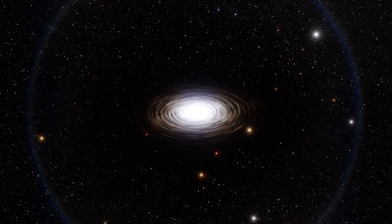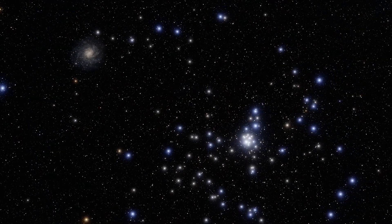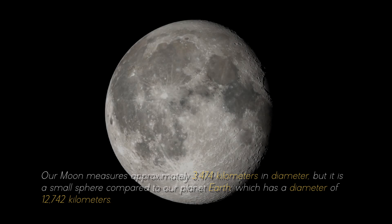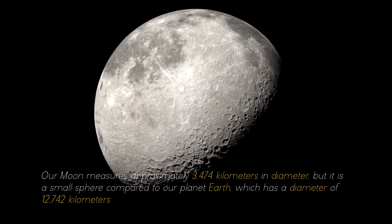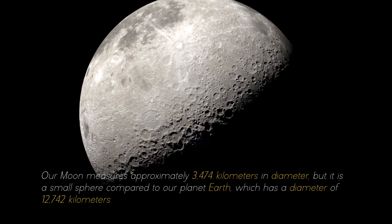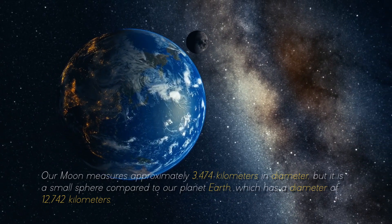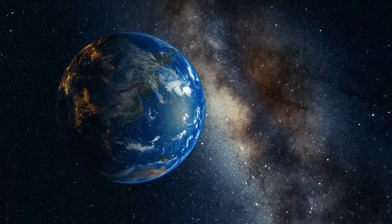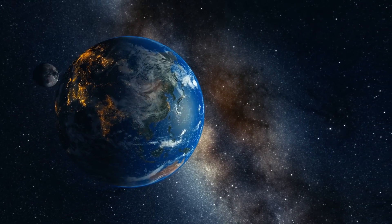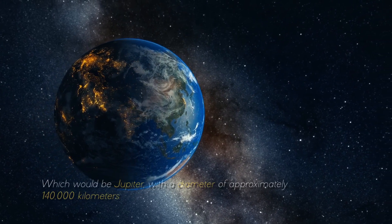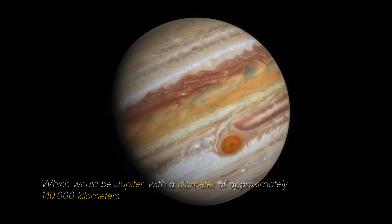To give you an idea of the colossal objects and structures that abound in the cosmos, it is necessary to start at the beginning. Our moon measures approximately 3,474 kilometers in diameter, but it is a small sphere compared to our planet Earth, which has a diameter of 12,742 kilometers. If we compare it with the largest planet in our solar system, it would look like a ping-pong ball in front of a soccer ball, which would be Jupiter, with a diameter of approximately 400,000 kilometers.